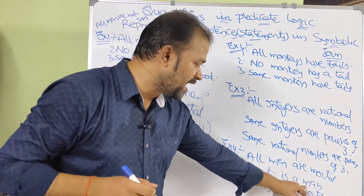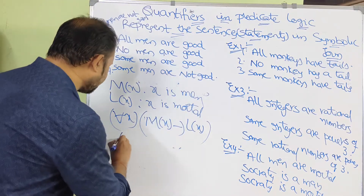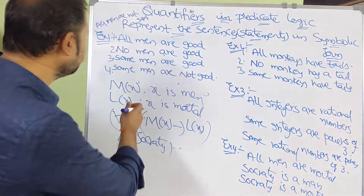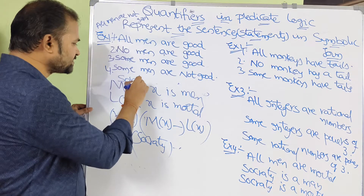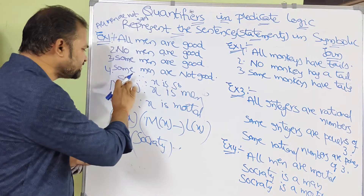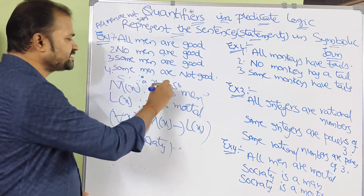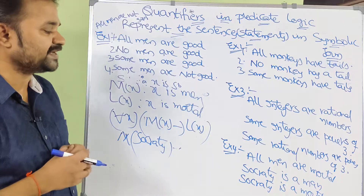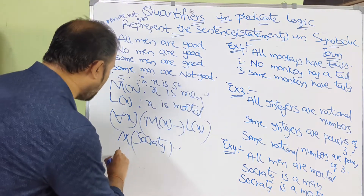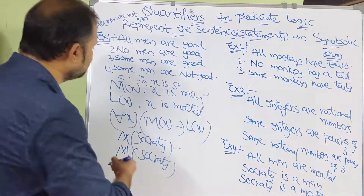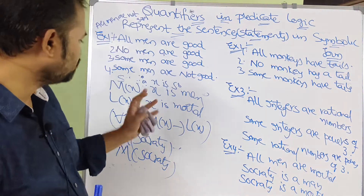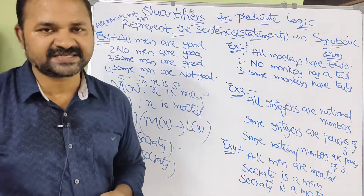Second sentence: 'Socrates is a man.' The predicate is M, so we write M(Socrates). We can directly write Socrates as the subject, or define s as standing for Socrates and write M(s). Third sentence: 'Socrates is mortal.' The predicate is L, so we write L(Socrates) or L(s), where s means Socrates.